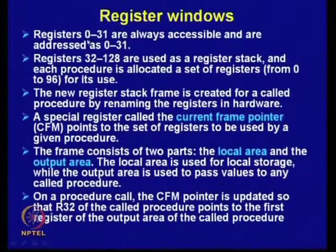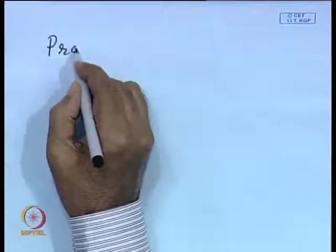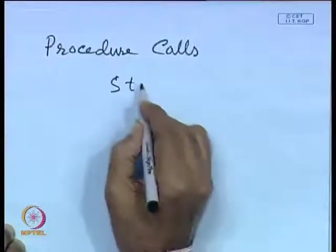IA64 uses the concept of register windows. It has 128 fixed-point registers, of which registers 0 to 31 are always accessible. The remaining registers 32 to 128 are used as a register stack, and each procedure is allocated a set of registers. Normally a stack pointer is used, and the stack is available in memory for context switching.